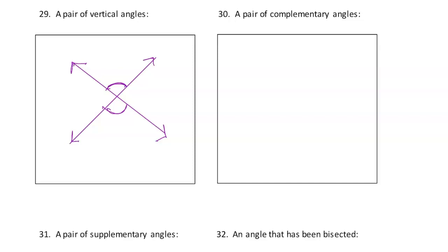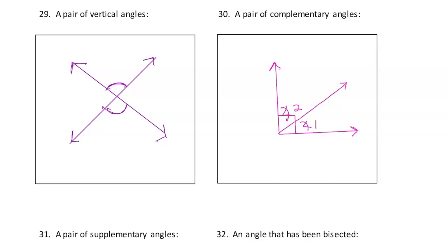Now draw a pair of complementary angles. I would draw a right angle, have this go straight up and down, and then have another ray in there — that makes angle 1 and angle 2 complementary, because they have to add up to 90 because of that box.